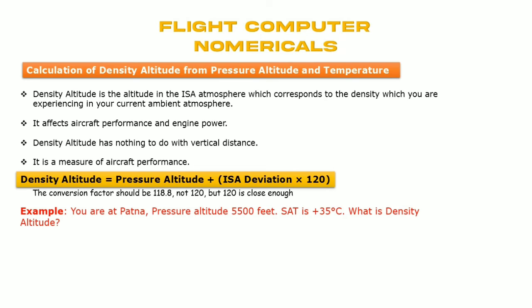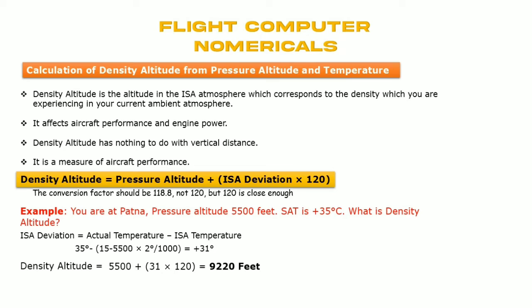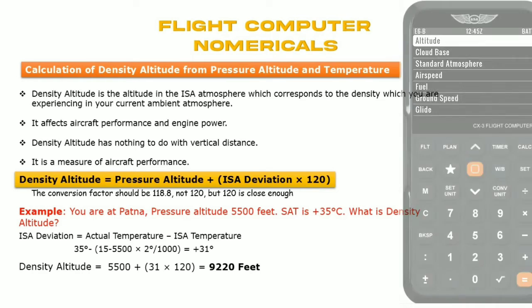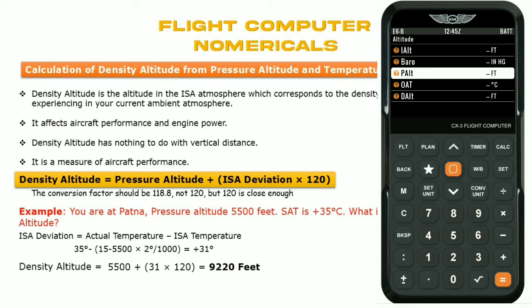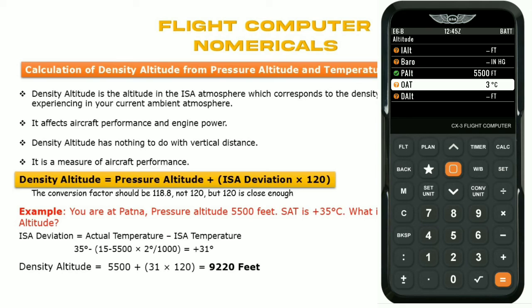Example: pressure altitude at Patna is 5,500 feet, static air temperature is plus 35 degrees Celsius — what is density altitude? First find ISA deviation: actual temperature plus 15 minus ISA temperature gives deviation of plus 31 degrees Celsius. Putting the values in: density altitude = 5,500 + (31 × 120) = 9,220 feet. You can also use the flight computer — go to the altitude column, enter pressure altitude 5,500 feet and OAT 35 degrees Celsius; the flight computer gives 8,931 feet.